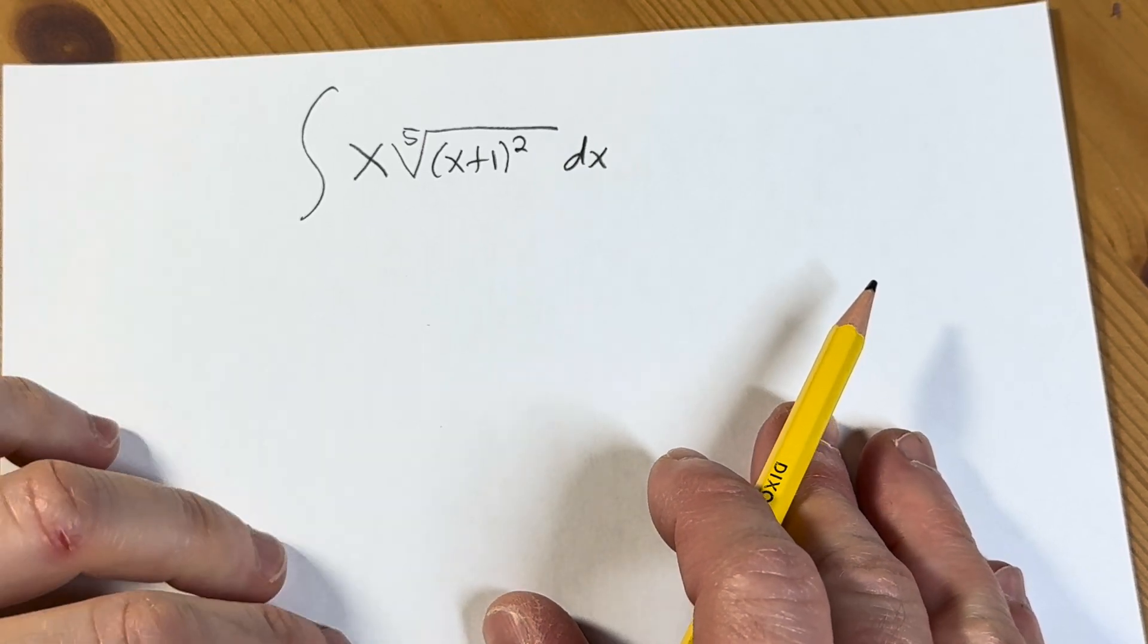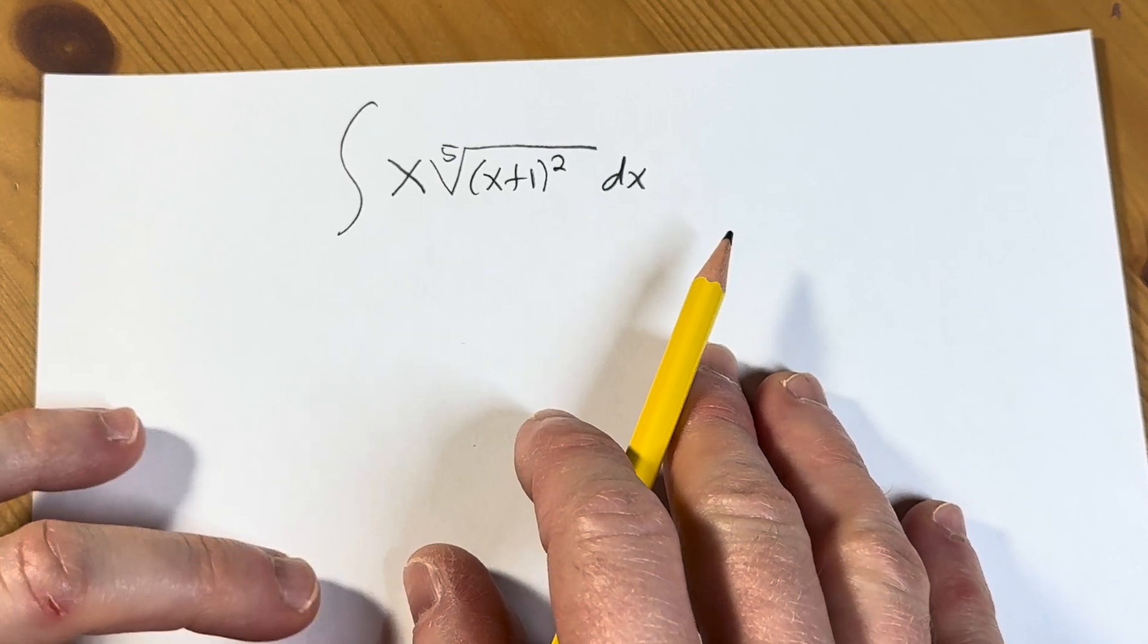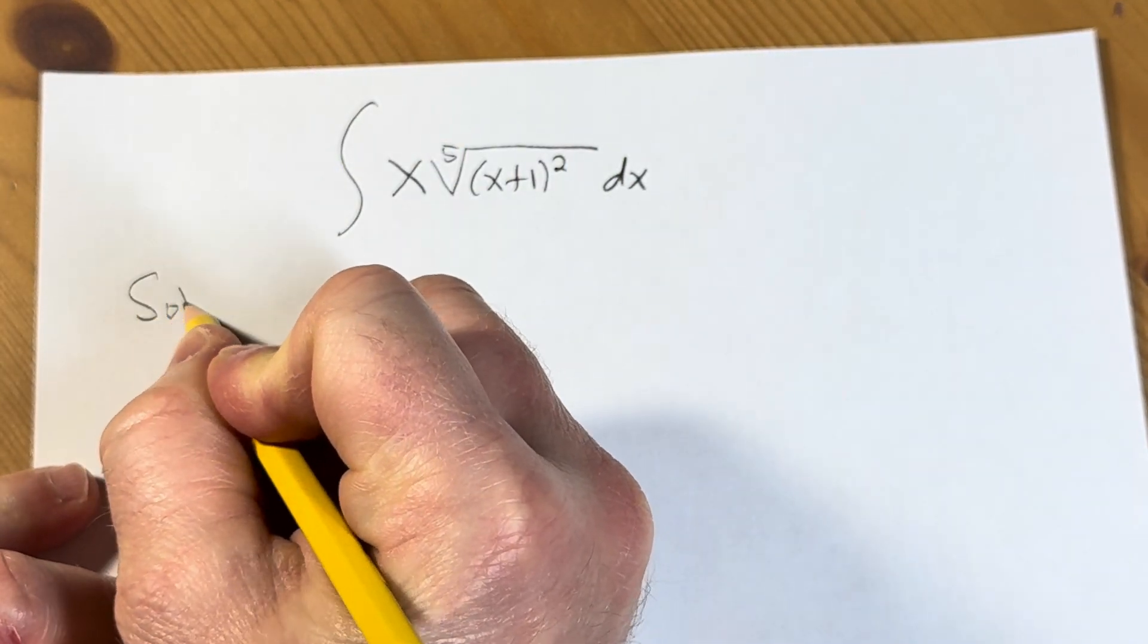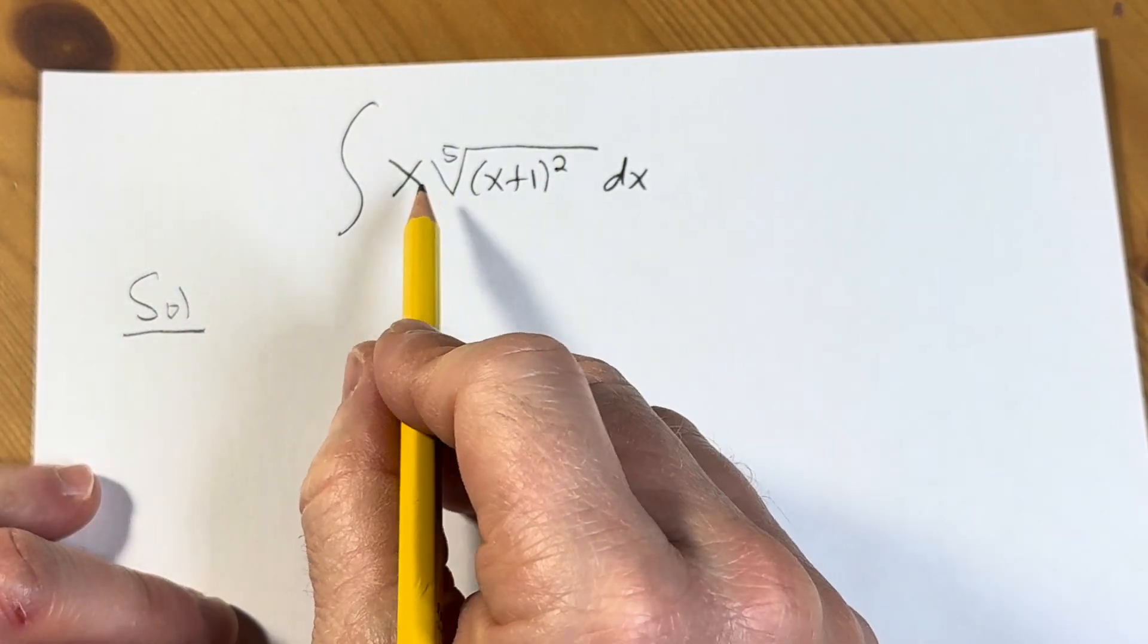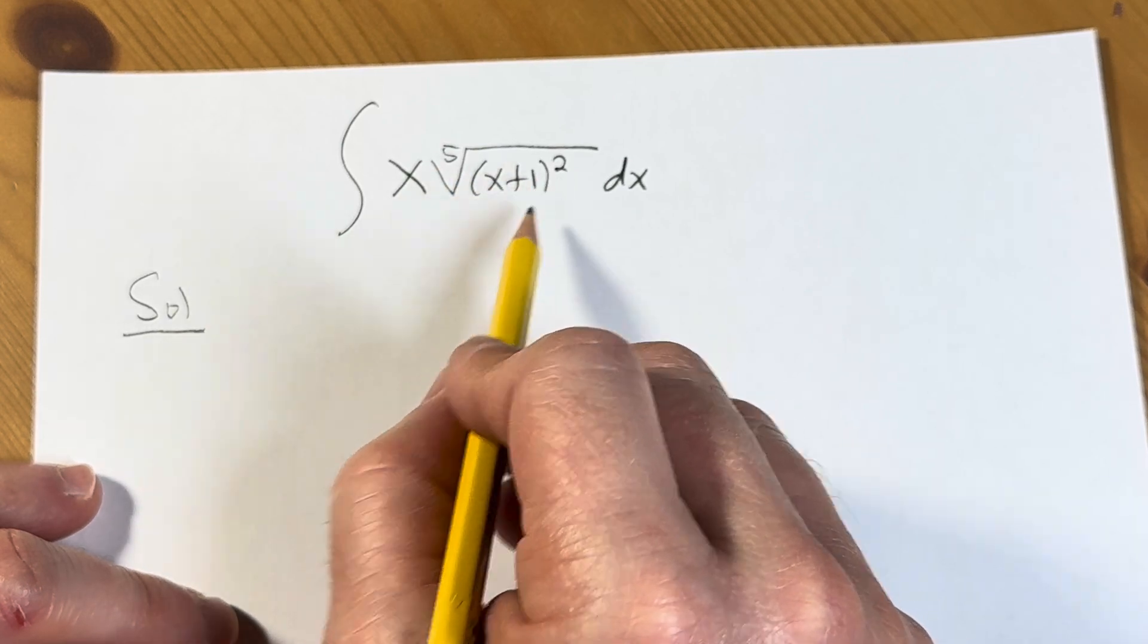Hi, in this video we are going to work out this indefinite integral. Let's go ahead and work through it. Solution. So we have x times the fifth root of the quantity x plus 1 squared.